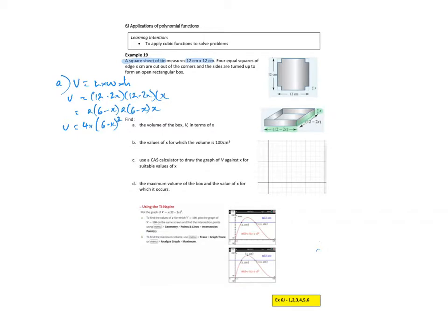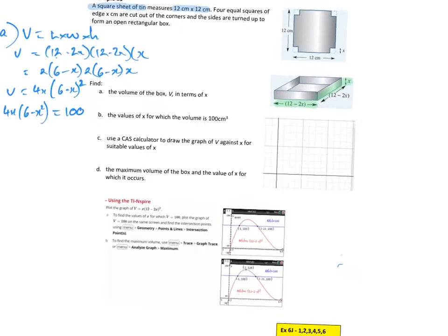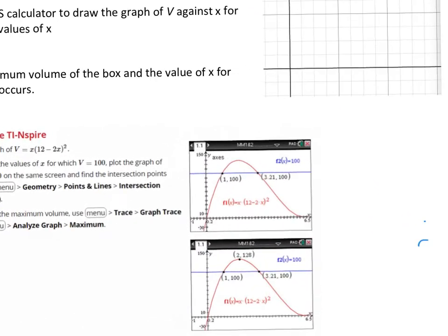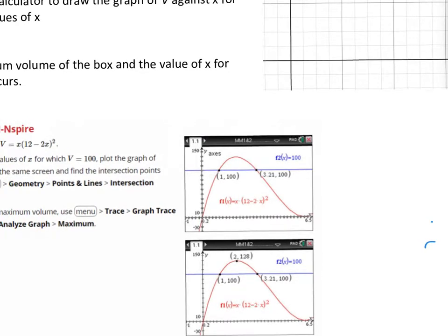Find the values of X for which the volume is 100. So in other words, I've got to solve this expression equal to 100. Let's see if I can zoom it up. If we zoom down into our calculator, we can see there that that blue line is where the volume is 100, and we can see it's at the point where X is 1, and where X is 3.21.